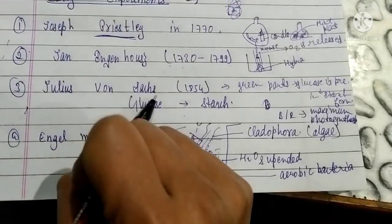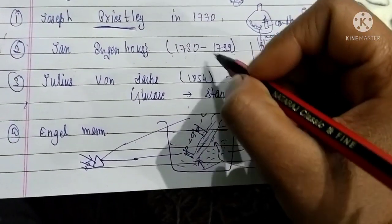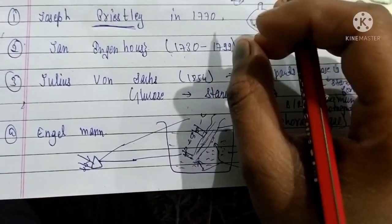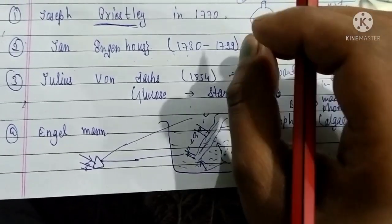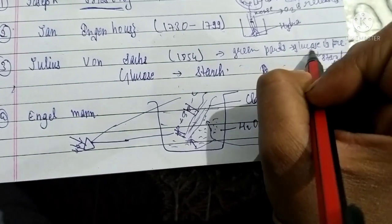Julius von Sachs in 1854 showed that the green colored parts contain chlorophyll present in the chloroplast, which is very important for the plant, and these green parts form glucose—starch.